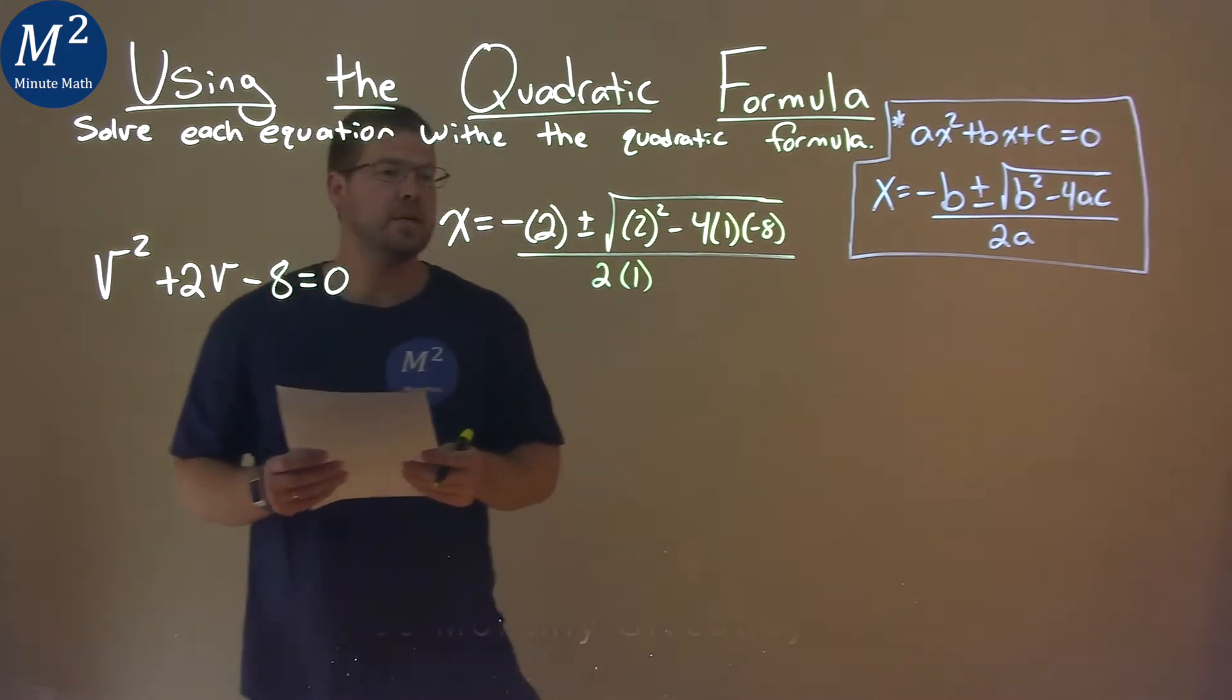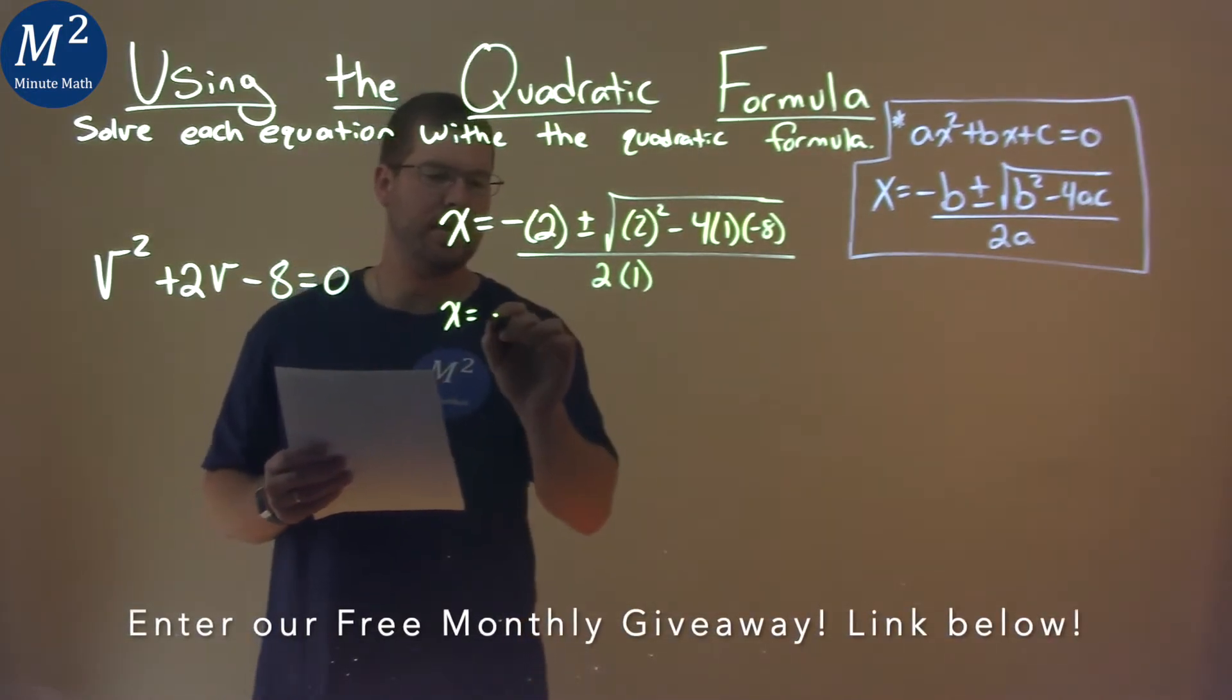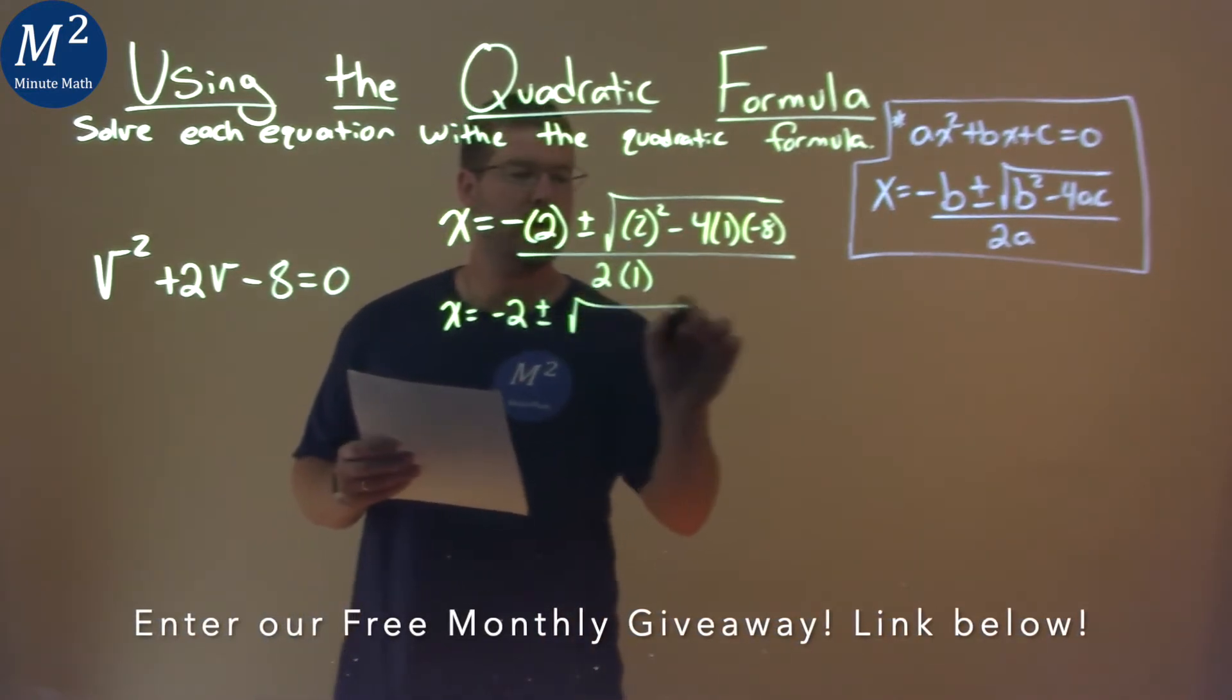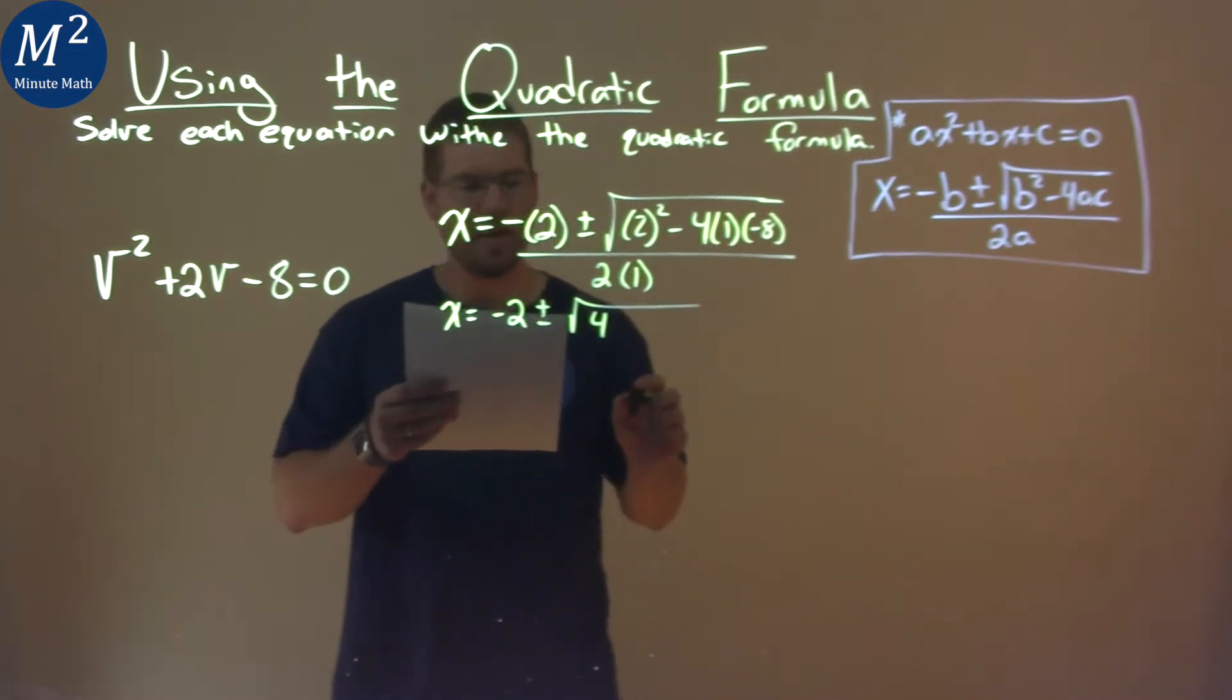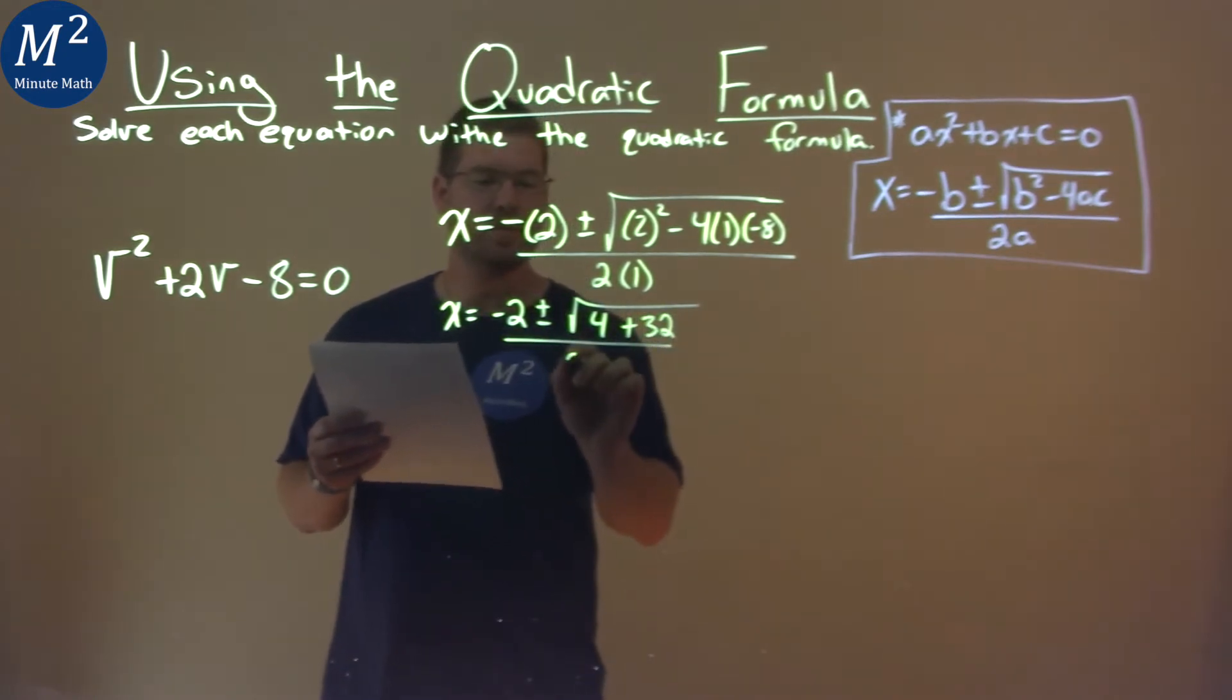So now we continue, let's just go simplify this now. x equals, well, a negative 2, plus or minus, inside the square root, 2 squared is a 4, and then a minus 4 times 1 times a negative 8, that's going to be a positive 32, all over 2.